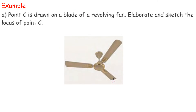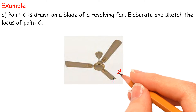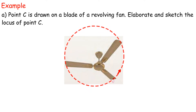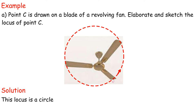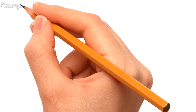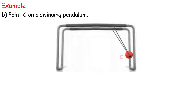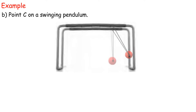Example A: Point C is drawn on a blade of a revolving fan. Elaborate and sketch the locus of Point C. Solution: this locus is a circle. Example B: Point C on a swinging pendulum. Solution: a curve.